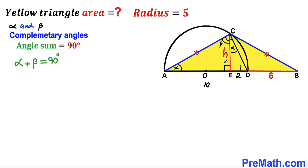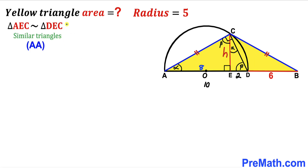Making an observation: segment AE is 8 units and tiny segment ED is 2 units, with height EC labeled as h. We conclude that triangles AEC and DEC are similar triangles by the Angle-Angle similarity theorem — both are right triangles sharing complementary angles, giving us a proportion.